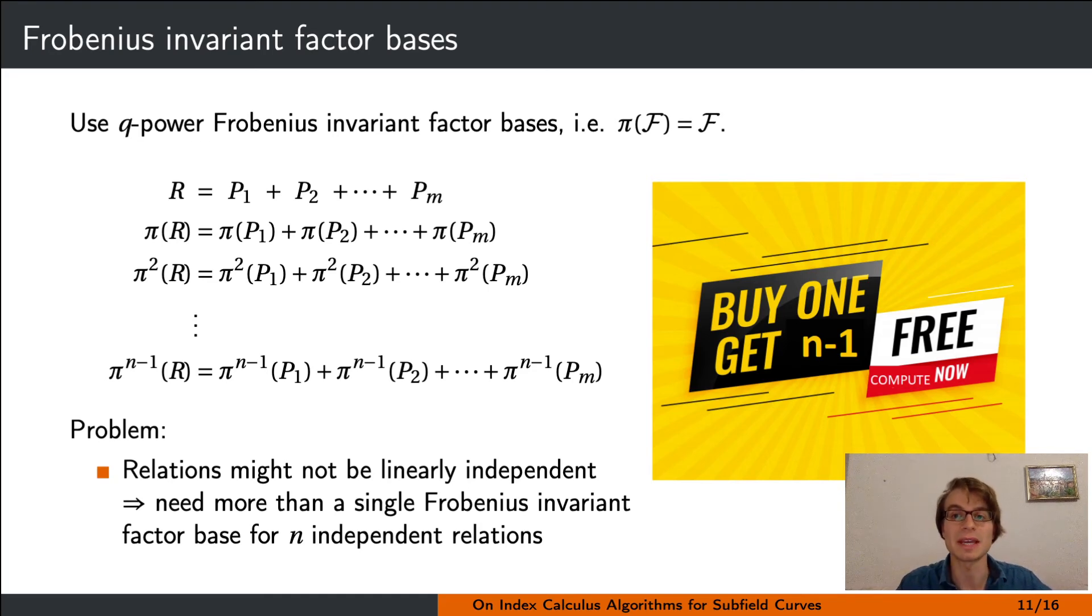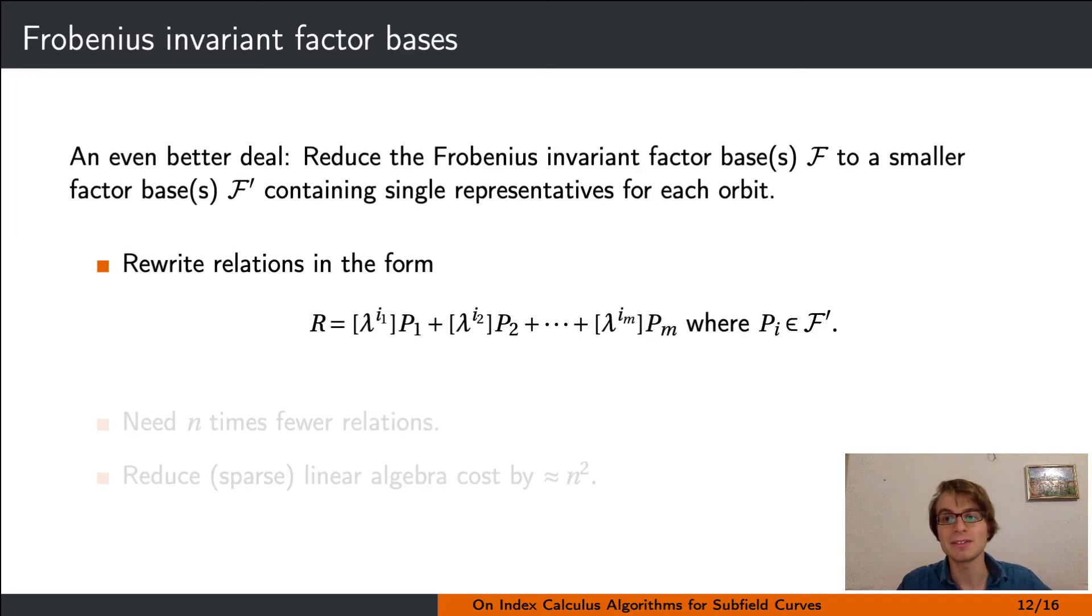But we can do even better than that. Given a factor base that is closed under the Frobenius endomorphism, instead of generating many more relations from a single one, we can build in an ad hoc manner a reduced factor base only containing one representative from each Frobenius orbit in the Frobenius invariant factor base. Given one relation from the larger factor base, we can then rewrite it in terms of a relation with respect to the reduced factor base using the previous lemma.